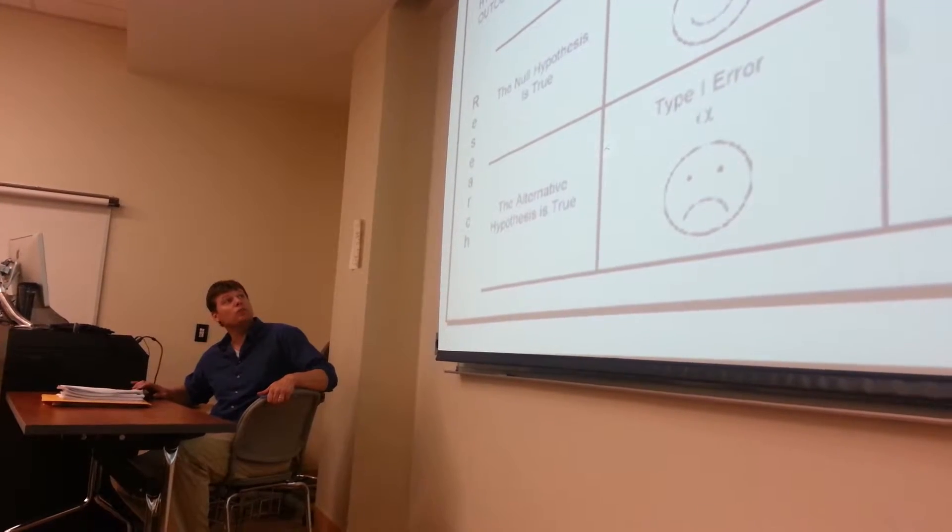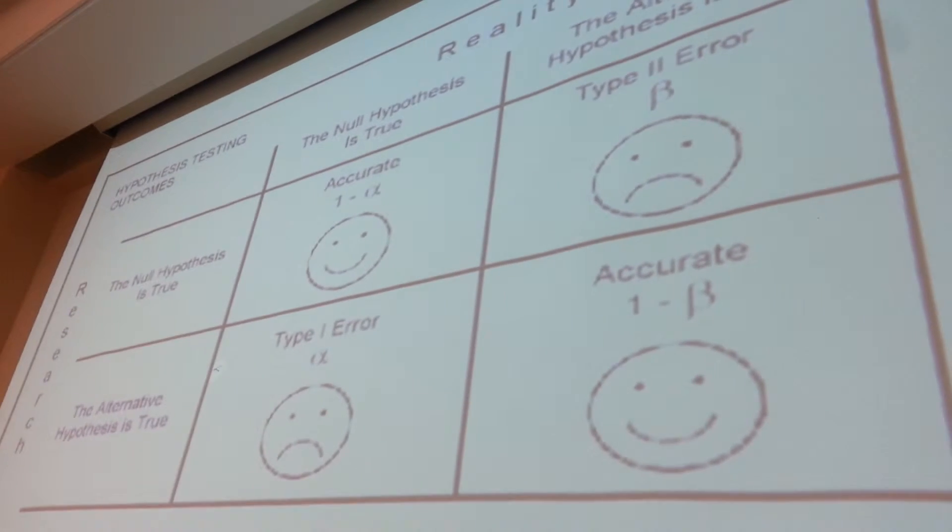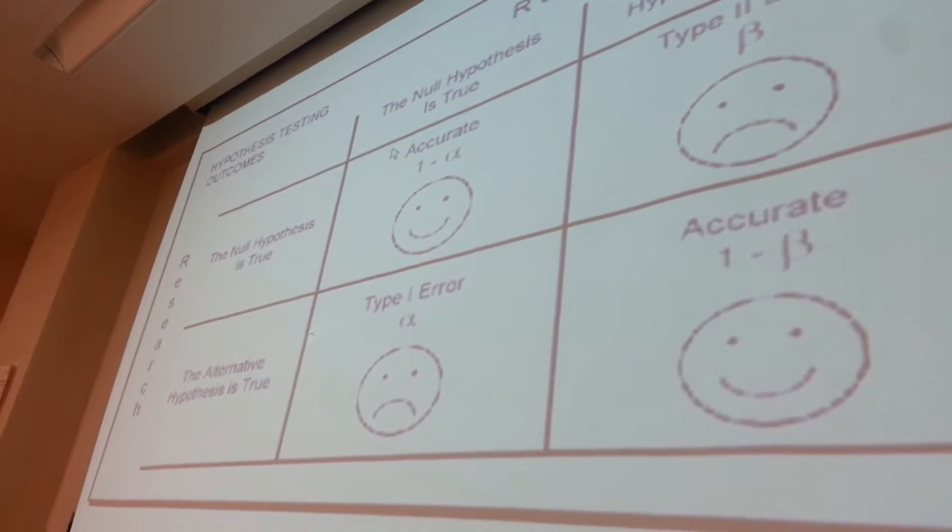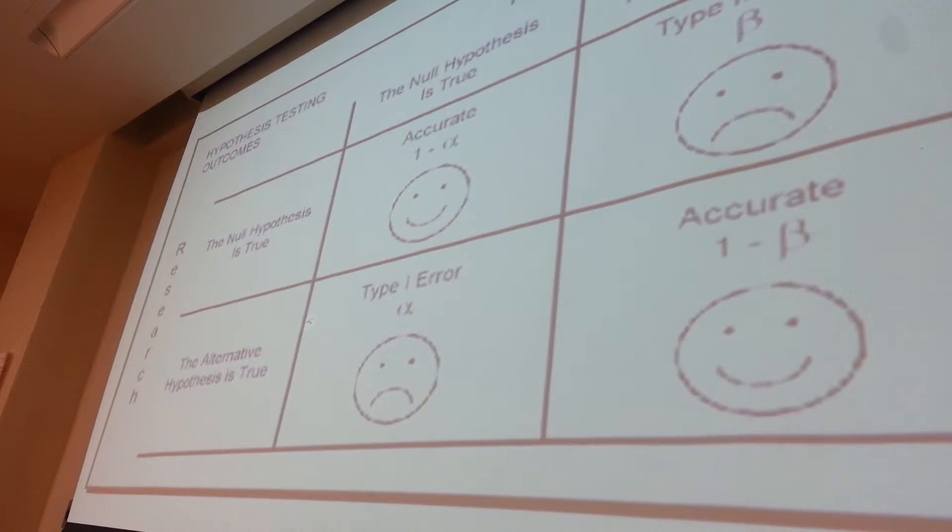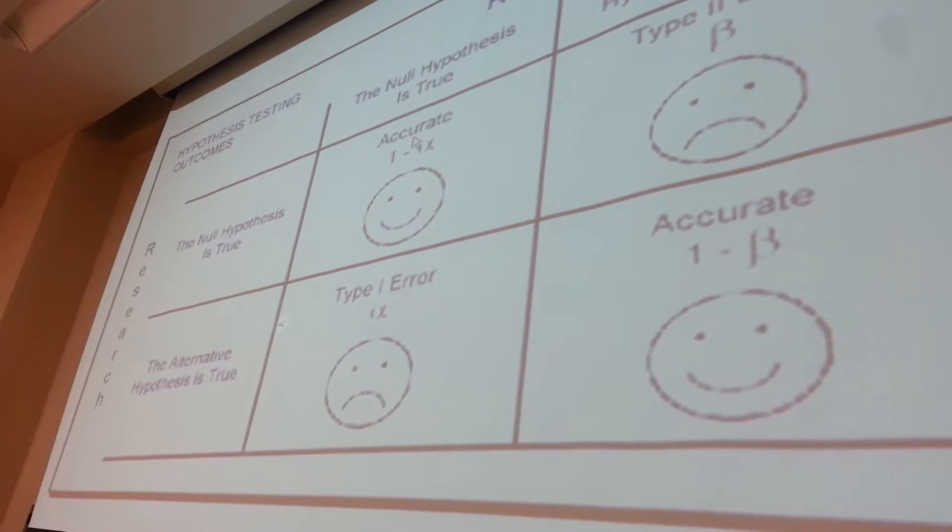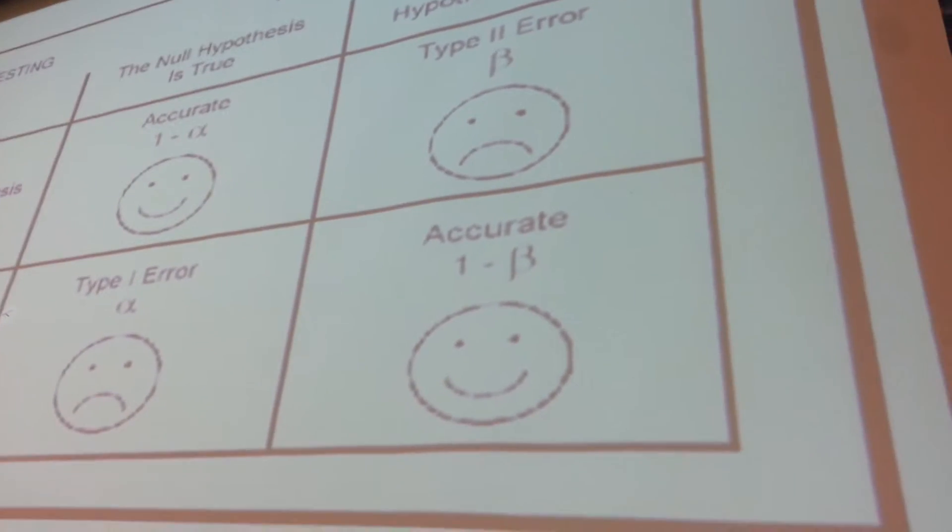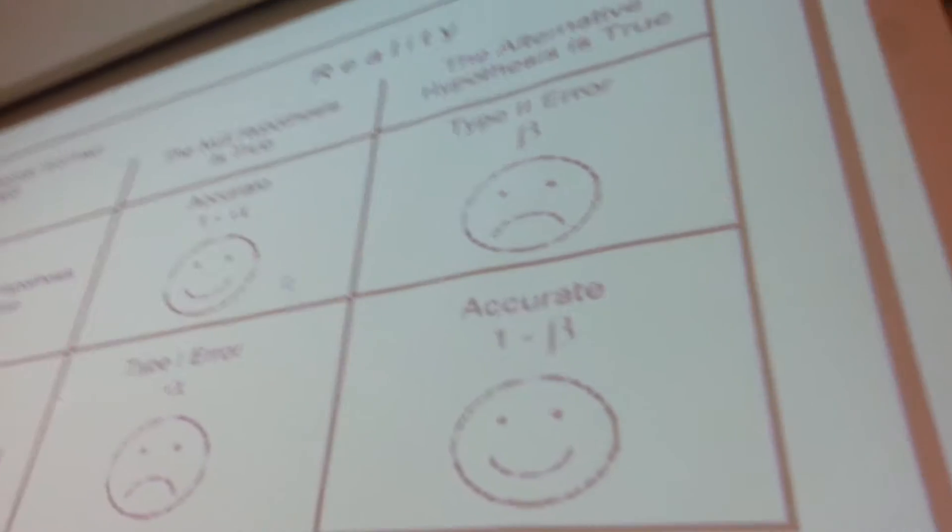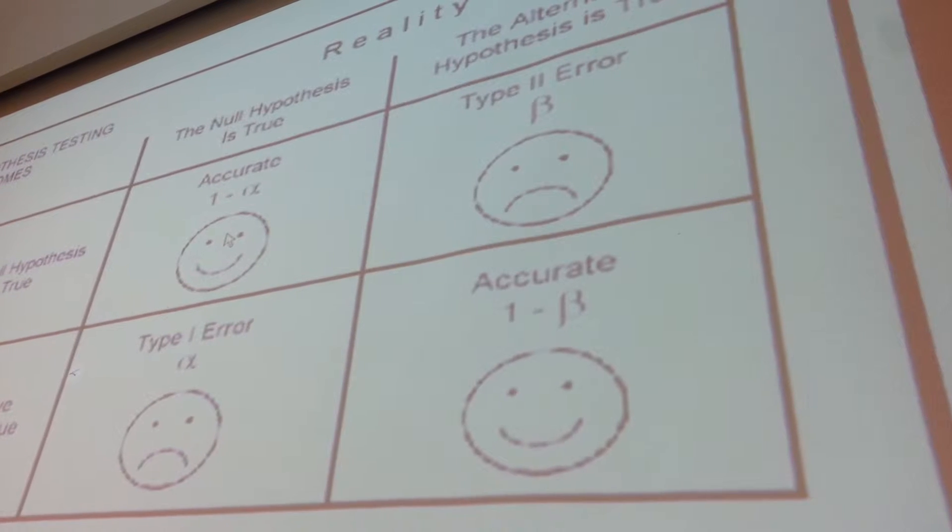And unfortunately, you never really know what's going on here with your research. So if you find something in a study where you say it looks like there's no difference, looks like there's no effect, what you're hoping for is that in reality there is no effect. Maybe there's no relationship between age and the number of friends people have. So if you find in your research there's no relationship, then you're hoping that means in reality there's no relationship.